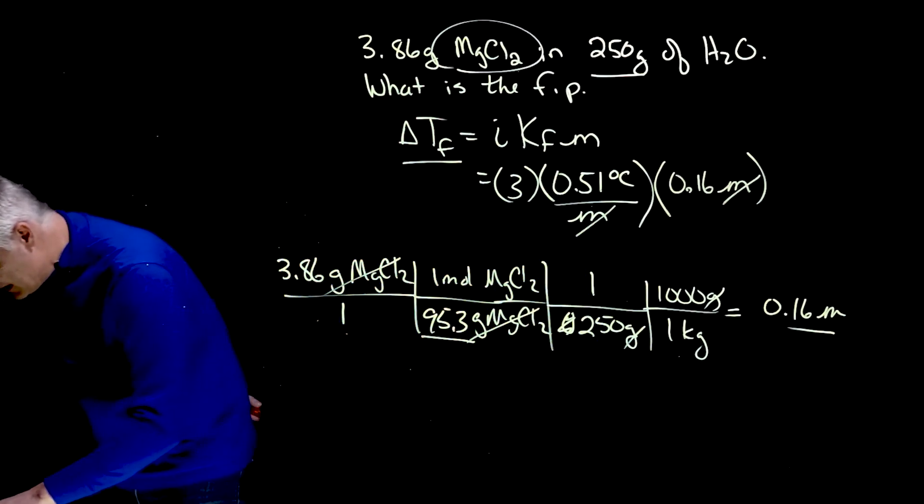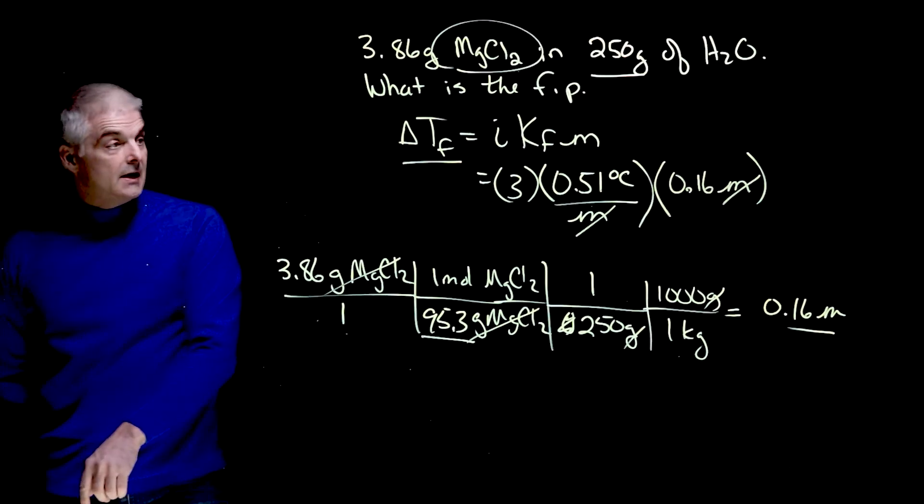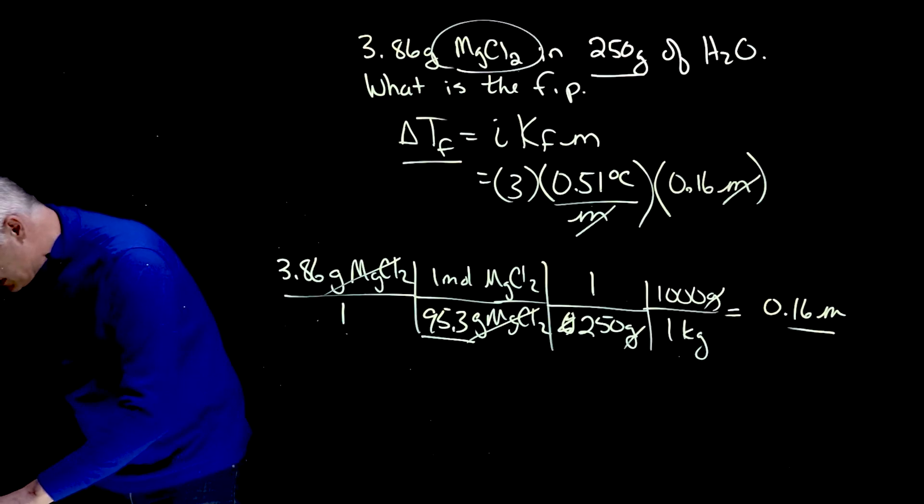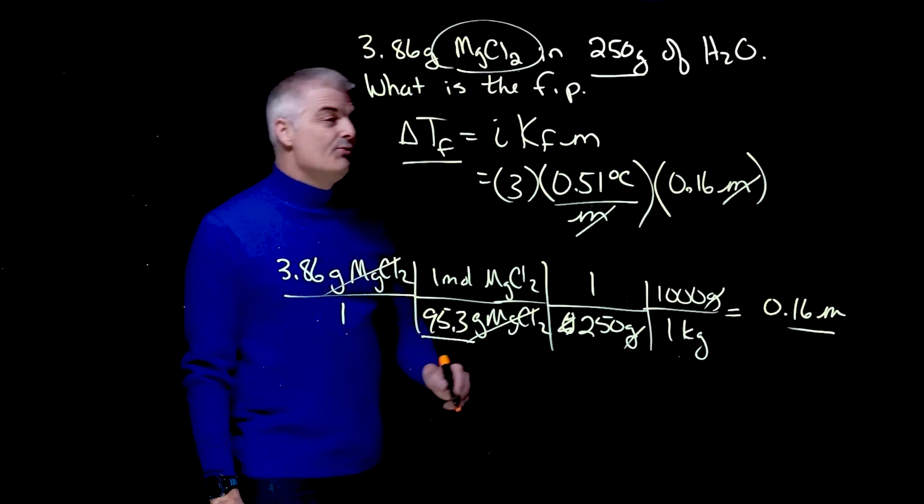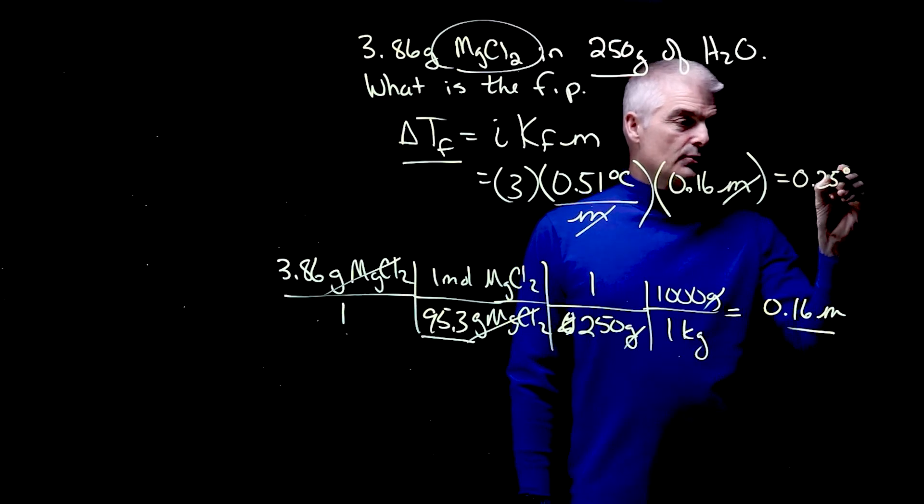3 times 0.51 times 0.16. This could be a small number. I get 0.25, 0.25 degrees Celsius.